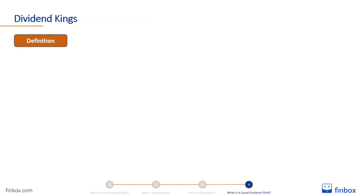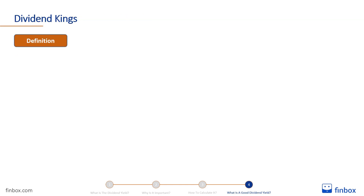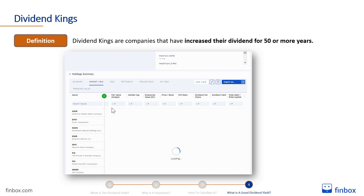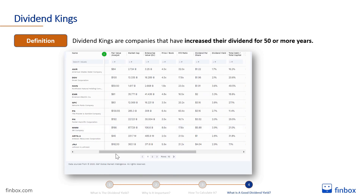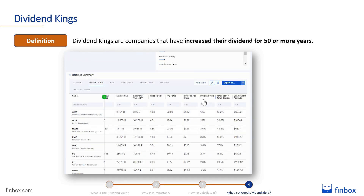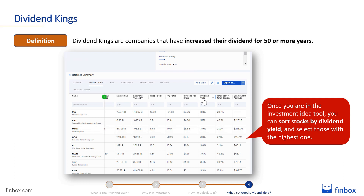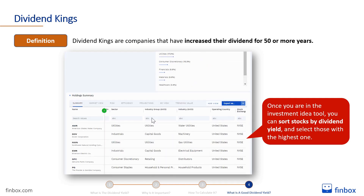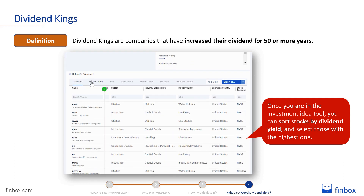A popular list to select high-dividend yield stocks is the Dividend Kings, which are companies that have increased their dividend for 50 or more consecutive years. You can find the list of Dividend Kings on Finbox at the link in the description below. Once you're in the Investment Idea tool, you can sort stocks by dividend yield and select those with the highest one.